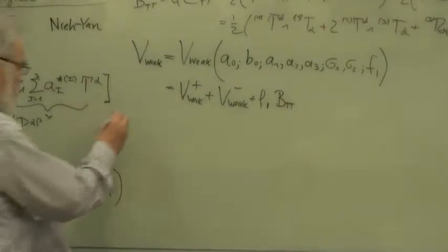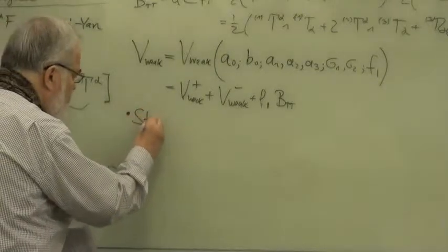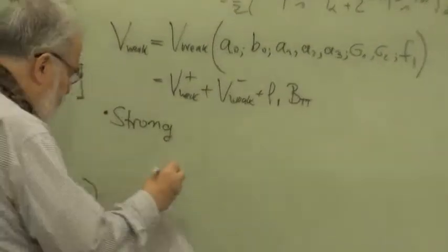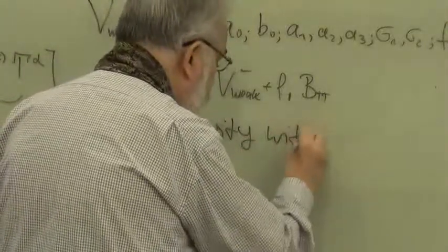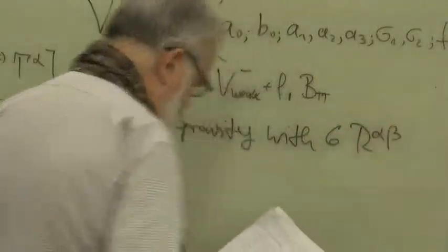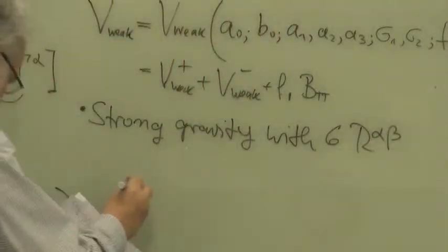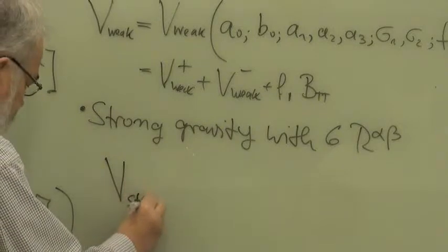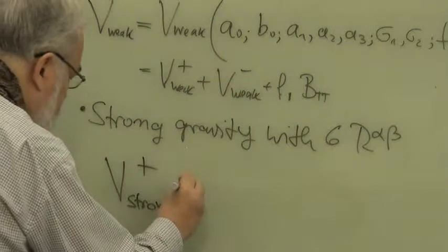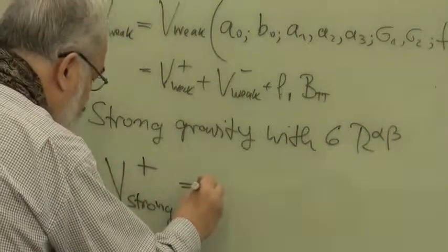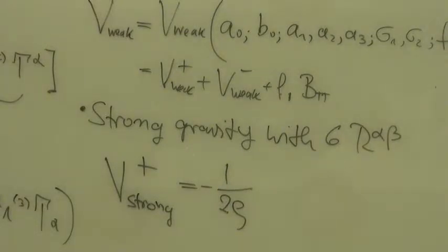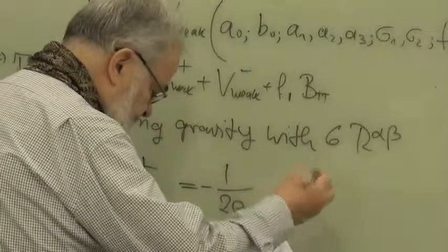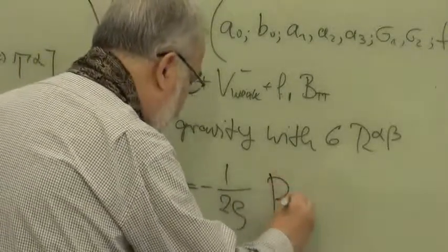And now something new comes: strong gravity. This word was used in a different context already in gravity. Strong gravity is really what is new and hypothetical. These are the six R-alpha-beta irreducible pieces. The coupling constant in the action is dimensionless — two over rho, where rho is a dimensionless coupling constant of strong gravity which can have any value. This is a hypothesis, and we get just the six pieces of the irreducible decomposition.